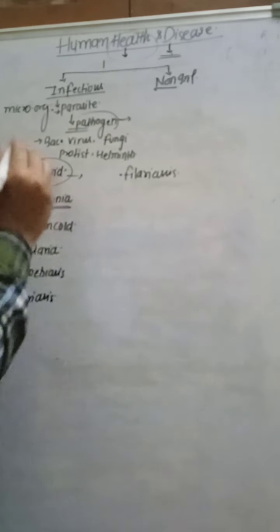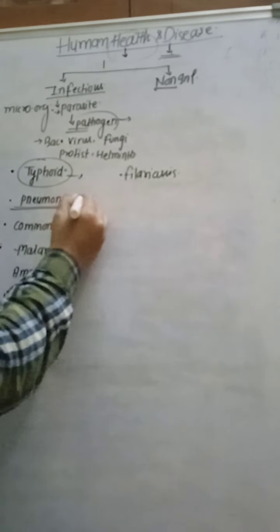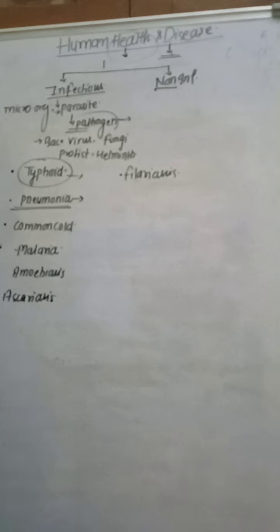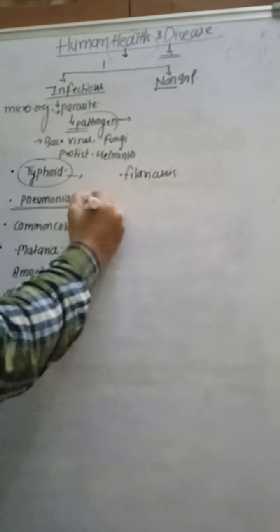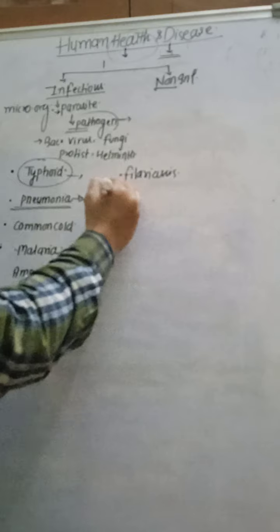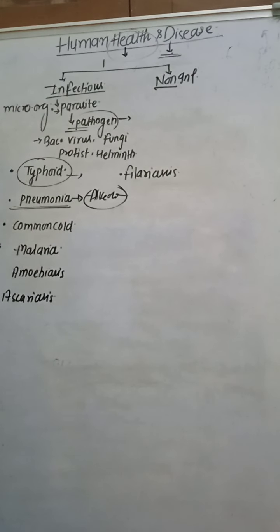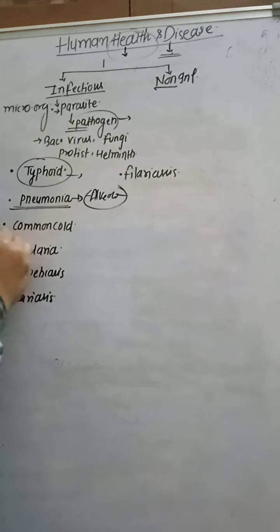Next is pneumonia, a bacterial disease caused by Streptococcus pneumoniae and Haemophilus influenzae. It spreads through the air via contaminated objects, sneezing and coughing, and is inhaled by the person. The bacteria infect the lungs, which become damaged and filled with fluid, causing breathing problems. In severe cases, the nails and lips turn bluish in color.